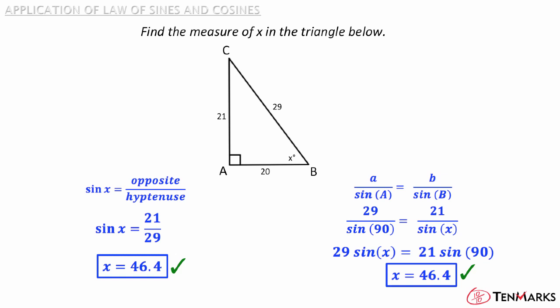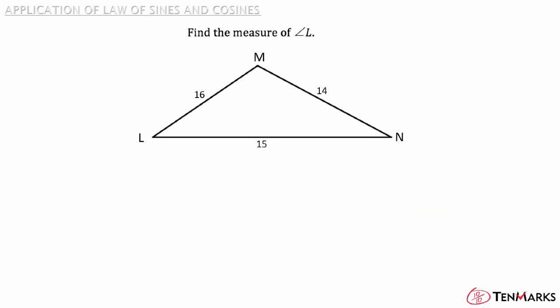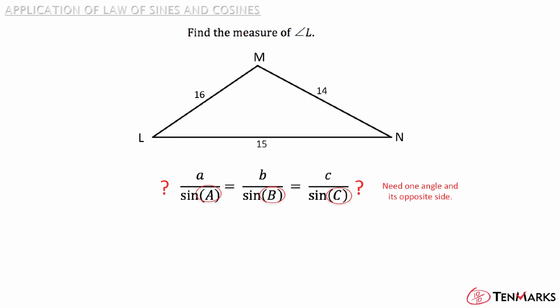But there are some triangles where only one method can be used. Find the measure of angle L. First you have to figure out which trig function to use. It's not a right triangle, so you can't use SOHCAHTOA. Can you use the Law of Sines? In order to use the Law of Sines, you need at least one angle and its opposite side. Since you don't have any given angles in the triangle, you can't use the Law of Sines.